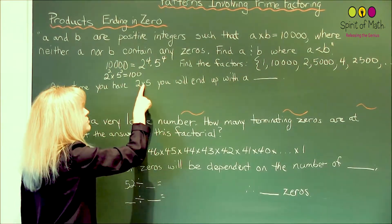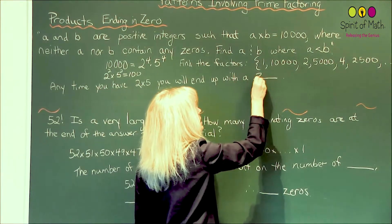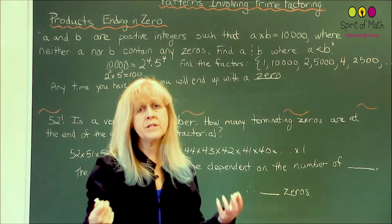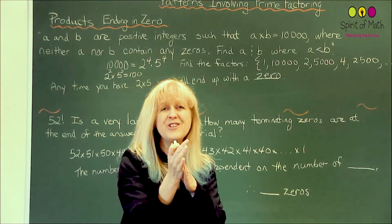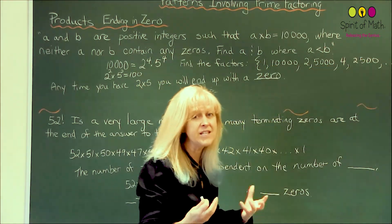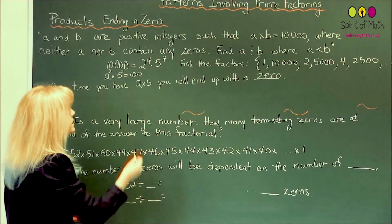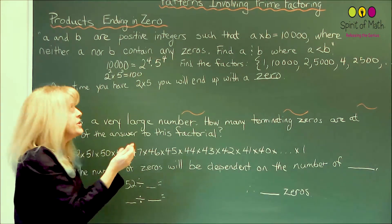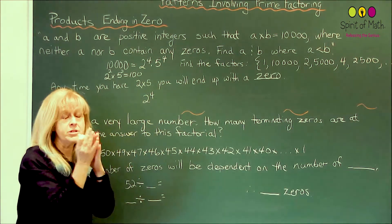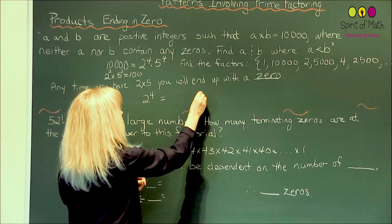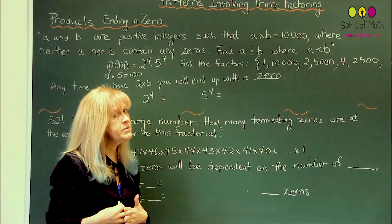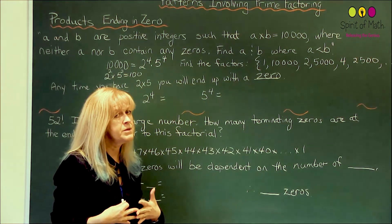So any time you have 2 times 5, you will end up with a zero. In other words, we have to pick numbers that don't have a 2 times a 5 together in them. So basically then, the only numbers that you can join together would be the 2 to the 4th can be joined together as one number, and you can also have 5 to the 4th. So as soon as you multiply them together and you include them in a number that's multiplied together, you end up with zero.